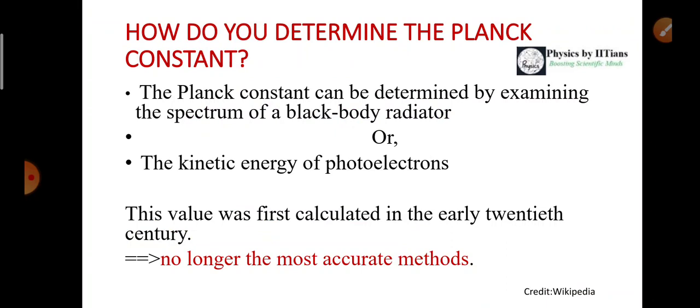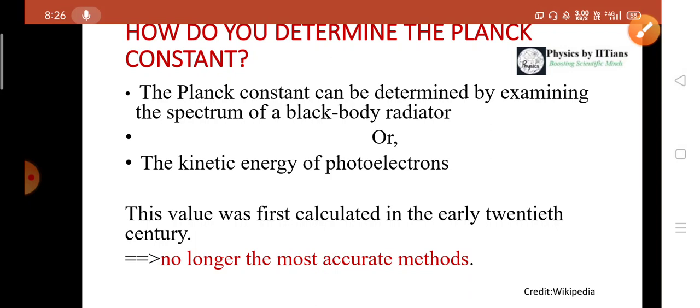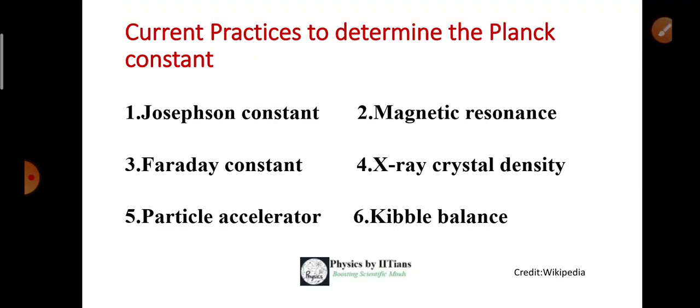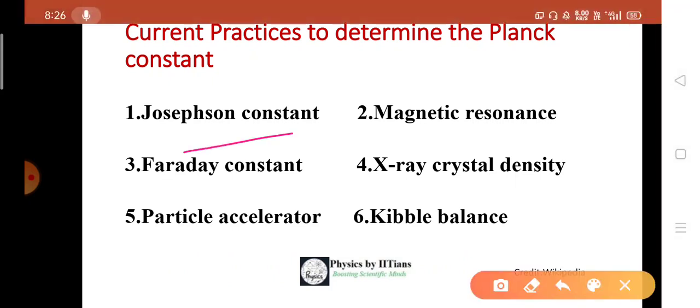How do you determine the Planck constant? The Planck constant can be determined by examining the spectrum of a black body radiator or from the kinetic energy of photoelectrons. But this value was first calculated in the early 20th century and is no longer the most accurate method. Current practices to determine the Planck constant are Josephson constant, Faraday effect constant, magnetic resonance, X-ray crystal density, particle accelerator, Kibble balance, etc.